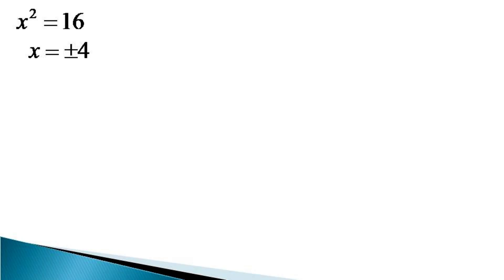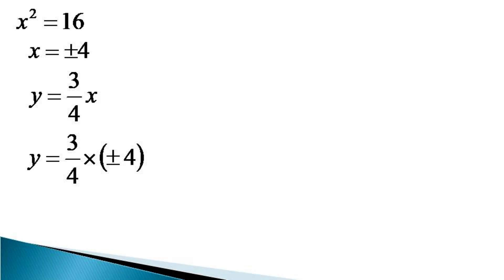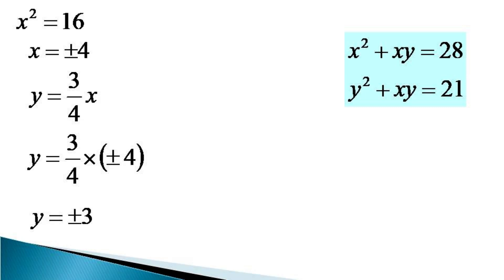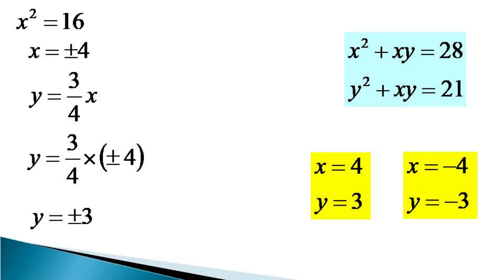So these are the two values of x. To evaluate y, we again use equation 3 which after putting the value of m gives y = (3/4)x. So the value of y becomes (3/4)(±4), and finally y = ±3. It can be verified that these two values of x and y satisfy the given set of equations. The solutions are x = 4 and y = 3, and the second solution is x = −4 and y = −3.